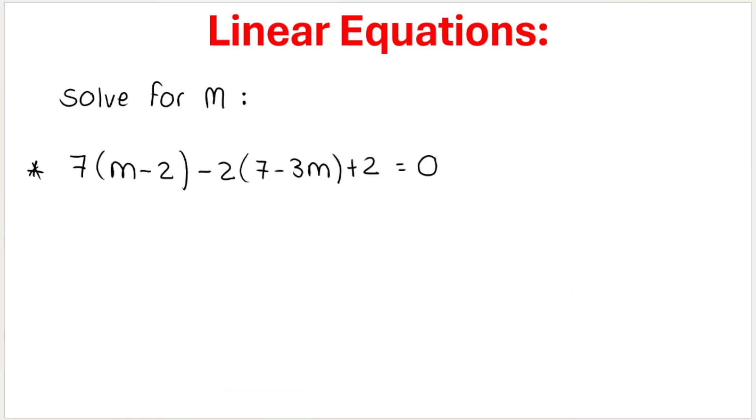In my second example, my variable is m. So I need to get m by itself. But first, you can see I have this situation over here, where I have to do the distributive property or the distributive law. And over here, where I have to do the distributive property or the distributive law. So you multiply into the brackets.